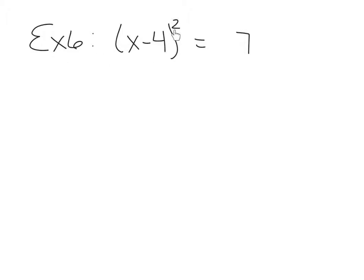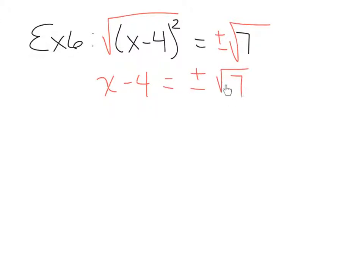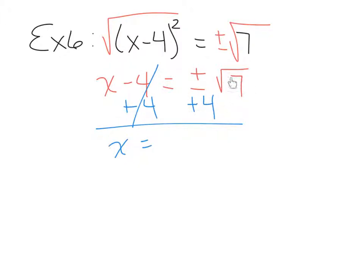Example 6: (x−4)² = 7. Make sure your exponent is isolated, then use a radical. Putting the radical on 7 generates the plus-minus. This gives us x−4 = ±√7. The square root of 7 does not simplify, and it's fine to leave the plus-minus in front of that radical. To isolate x, we add 4 to both sides. Since 4 and √7 are not like terms, the 4 does not combine with the radical — it becomes a separate term out front, giving x = 4 ± √7.